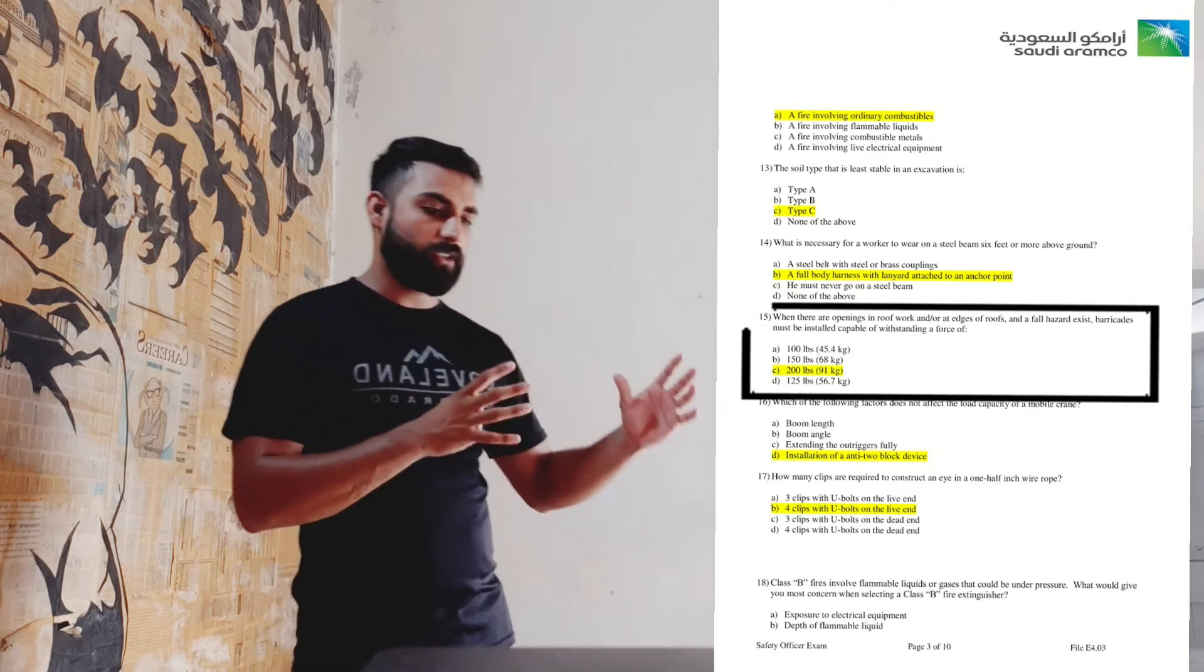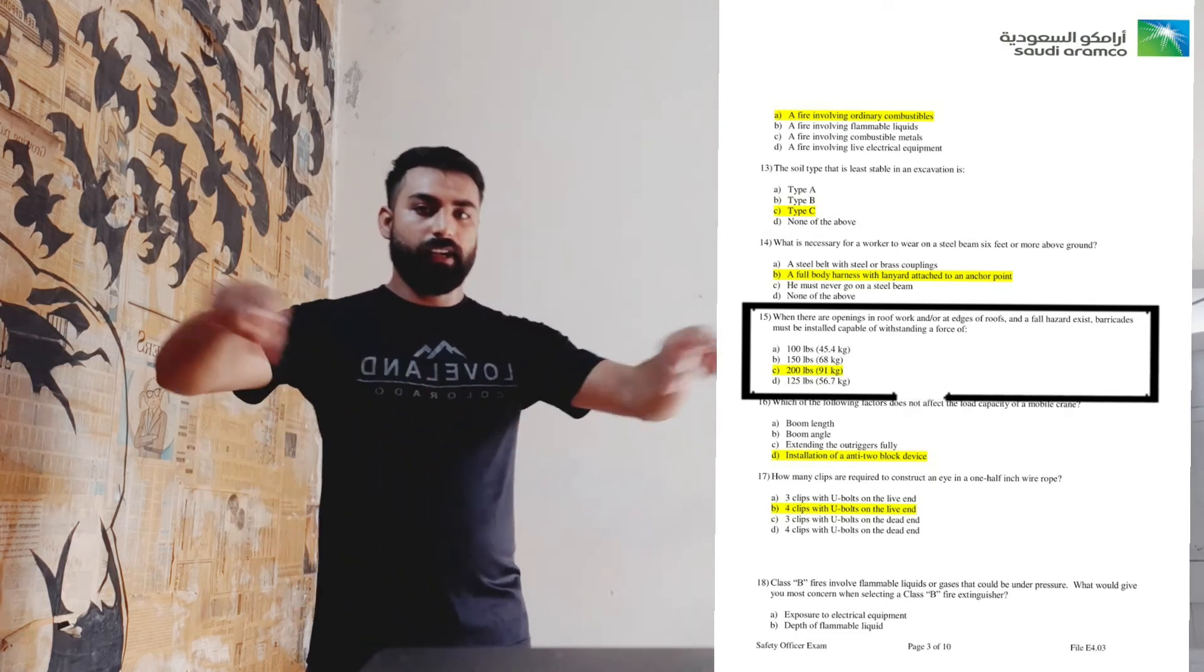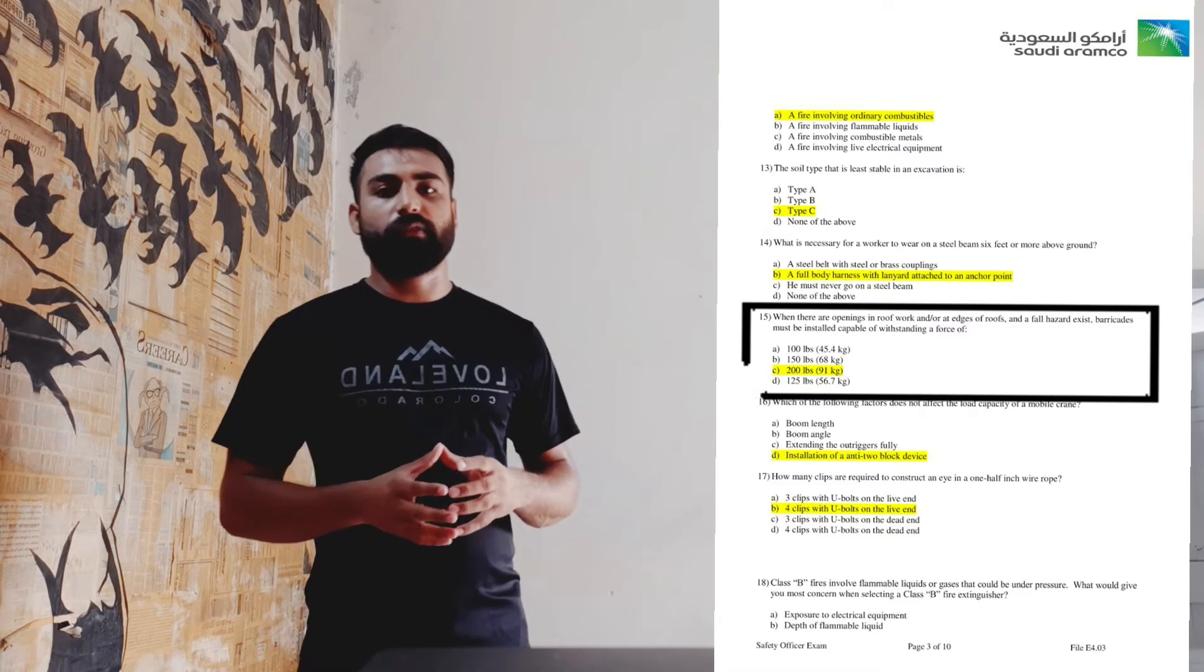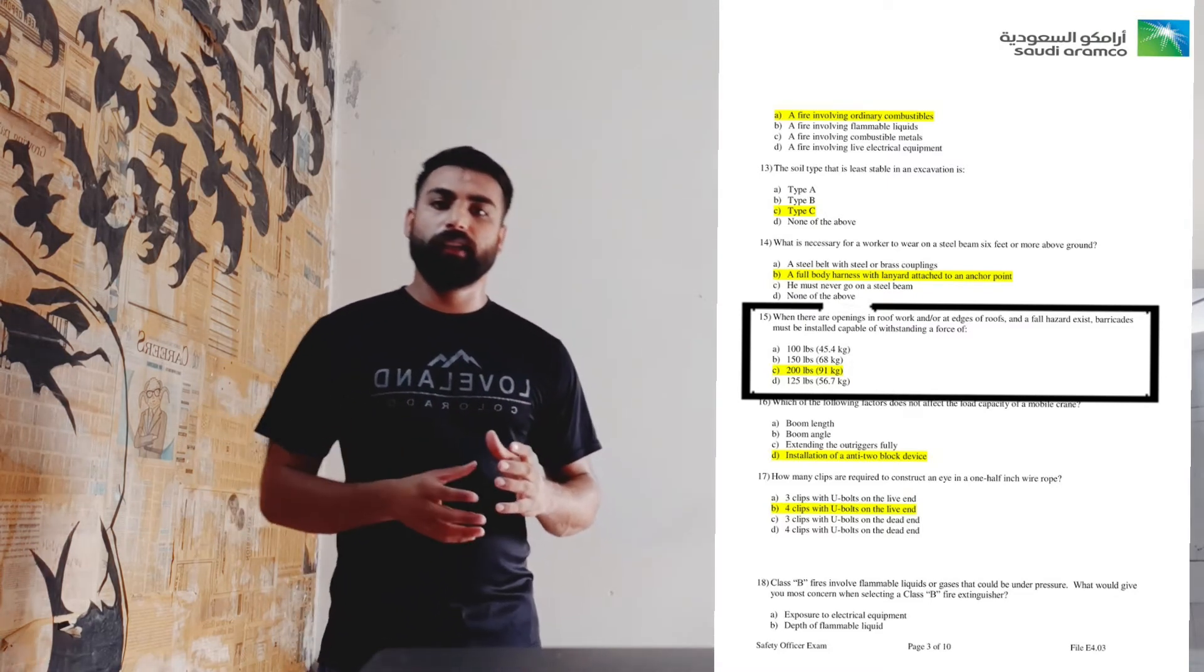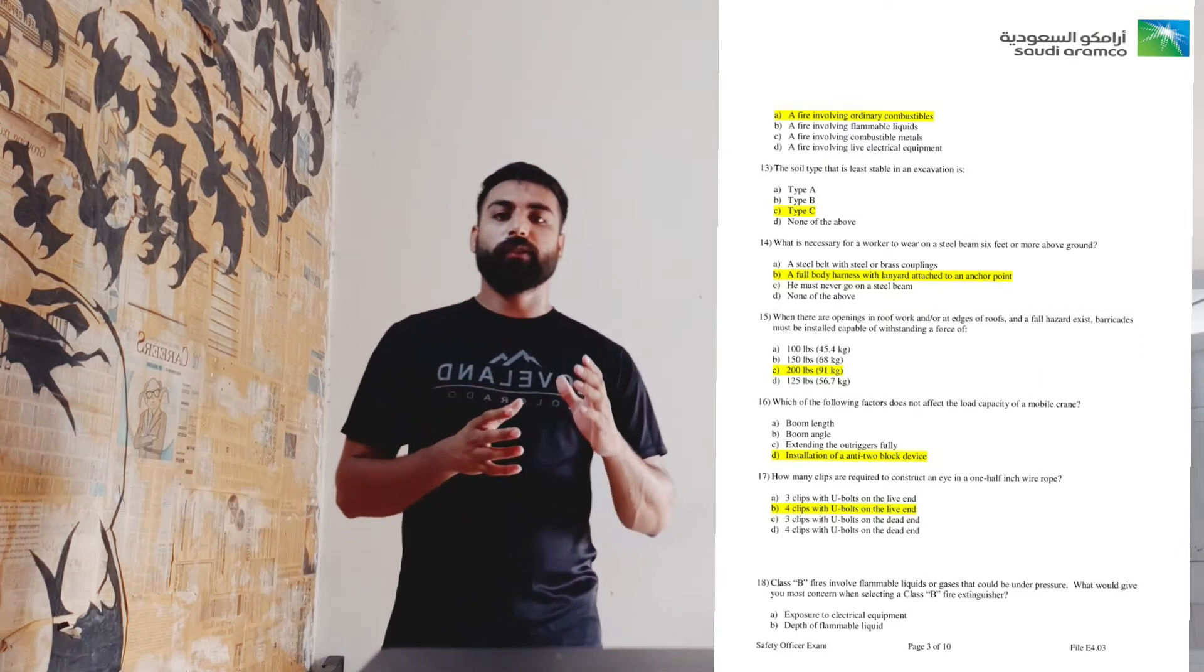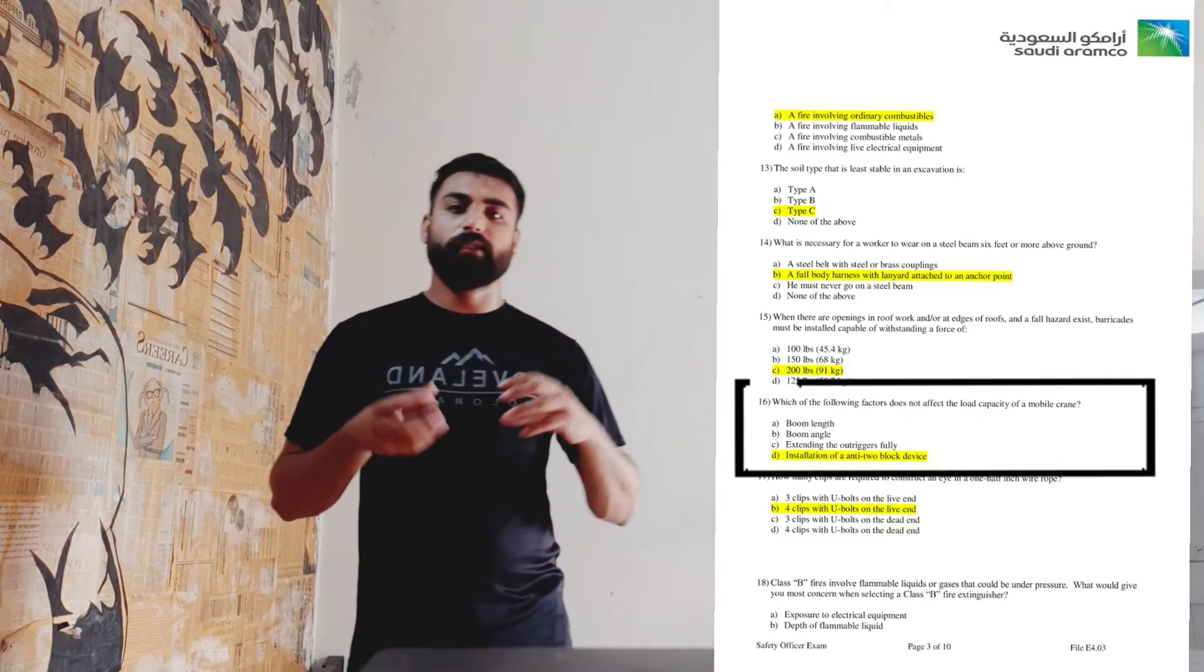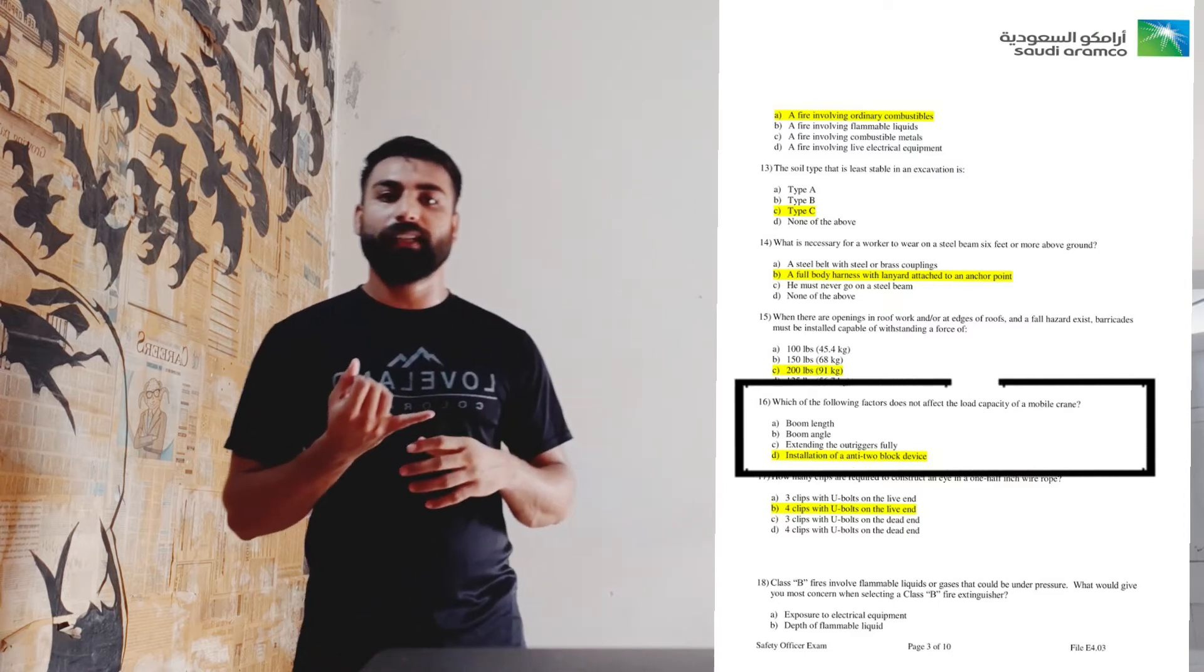Question number 15: they are asking that if we are working on any kind of roof which is having a capacity of falling, we should be having a barricade or railing around it that should be having a capacity of at least bearing 200 pounds, or it could be 91 kg. Questions 16 and 17 are regarding the lifting. In question number 16, they are asking which factors do not affect the load capacity of the crane.